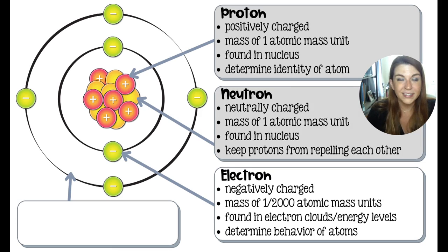Next, we have electrons. That is the final subatomic particle. Electrons are negatively charged. They have a mass roughly one two-thousandth of an atomic mass unit, meaning it takes roughly 2,000 electrons to have the same mass as a proton. So really crazy tiny. They're found outside the nucleus.